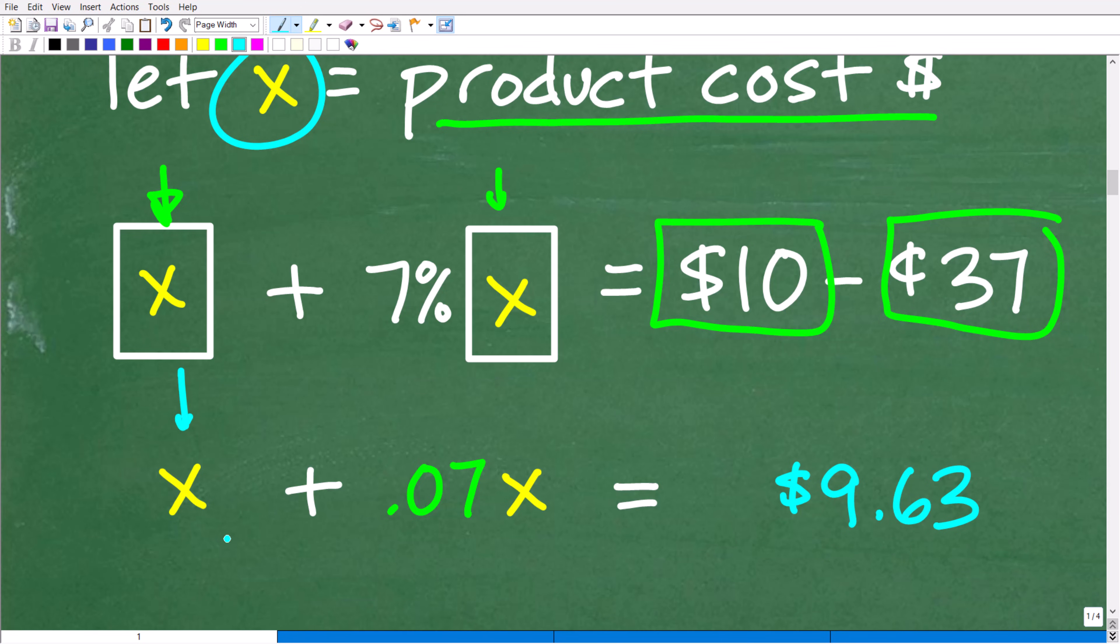So X is the cost of the product. Now, the sales tax, the way we calculate percentage, right, is going to be 7% of the cost of the product. So when you want to find the percent of a number, we're going to have to change that percent to a decimal. So 7% is the same thing as the decimal 0.07.